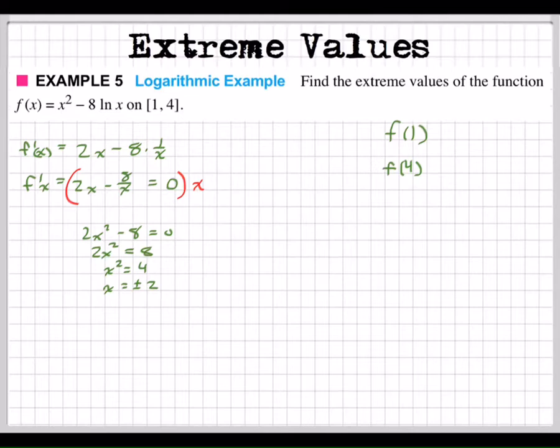What's wrong with one of these numbers? Yeah, we get positive 2 and negative 2. Negative 2 is not in our interval, right? That guy's not in our interval. So we're going to have to find f of 2.